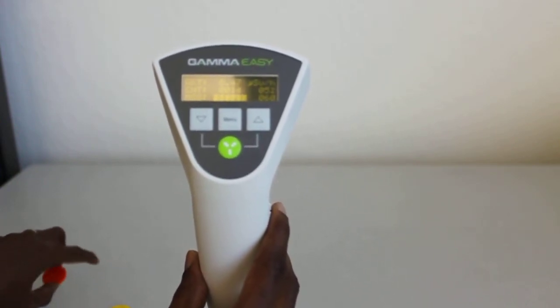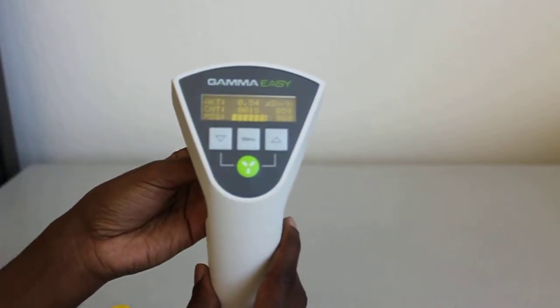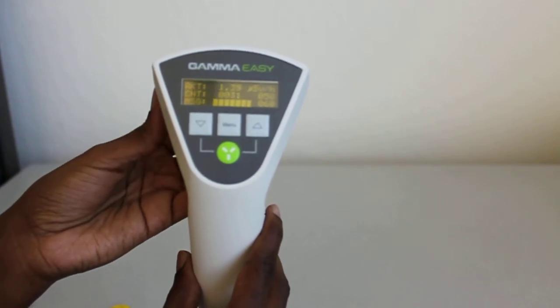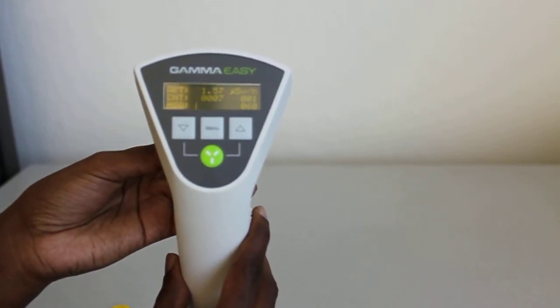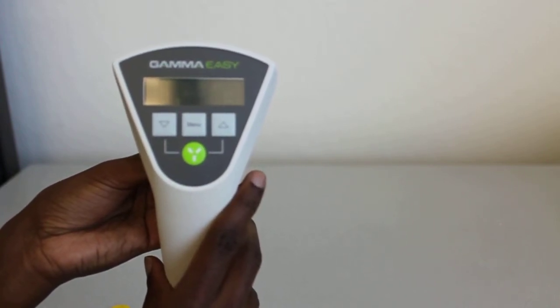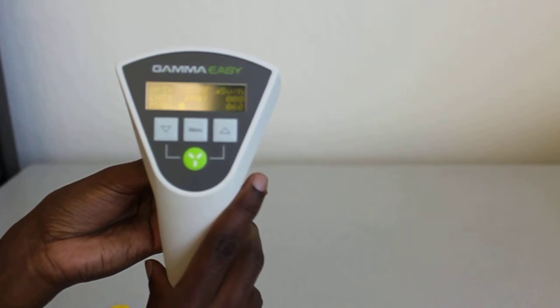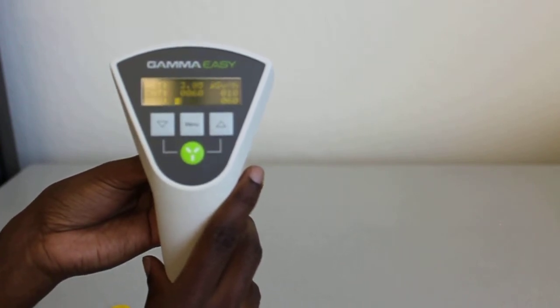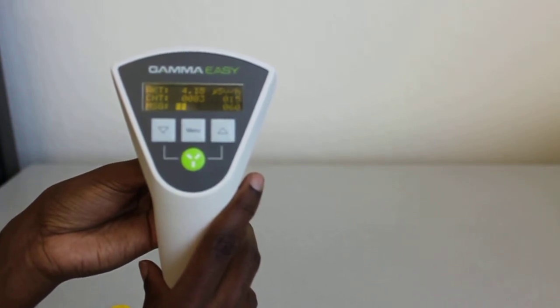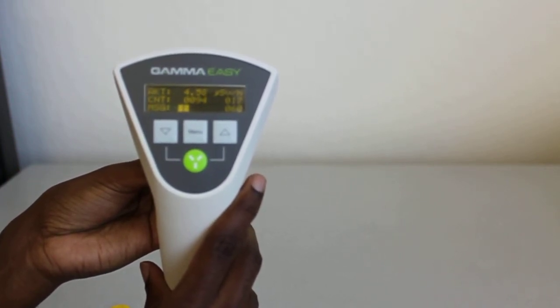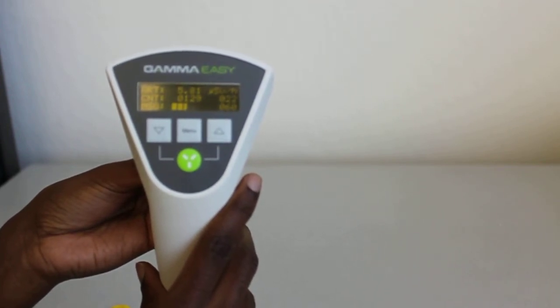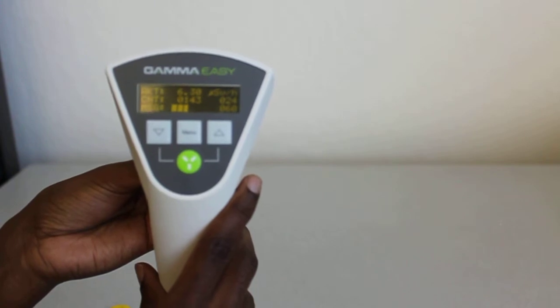And let's see how many counts per minute we can get here with the Cobalt-60 source. You can hear it kind of ticking away right now. Let me turn the display back on here. There we go. We're at a count of about 70 in about 15 seconds, maybe 80 in about 15 seconds. We're at a reading of about 6 microsieverts per hour, according to this device.